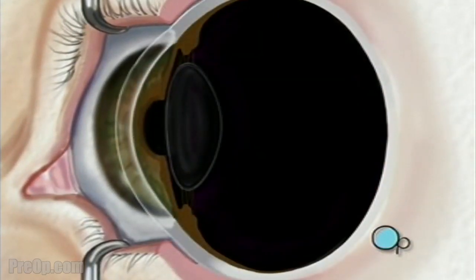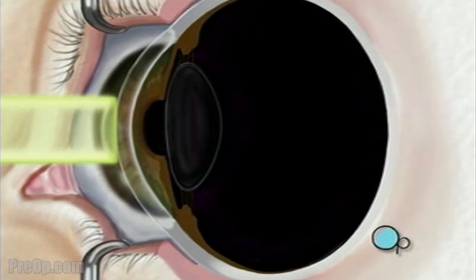Next, your doctor will use a computer to control pulses of cool laser light. These pulses will delicately remove microscopically thin layers of cells from the stroma.